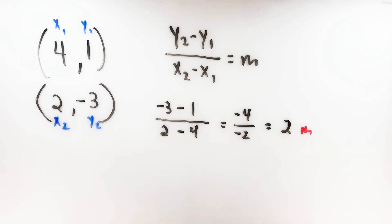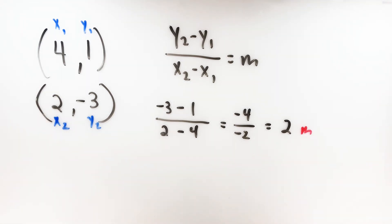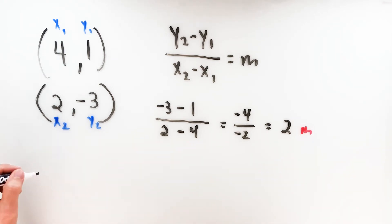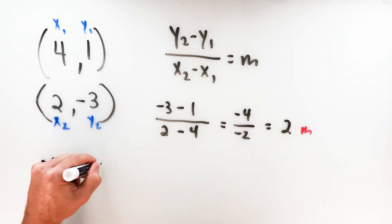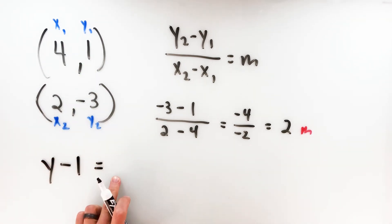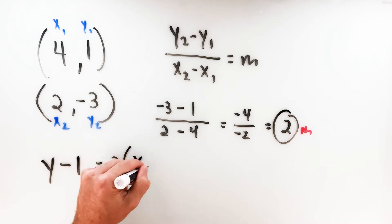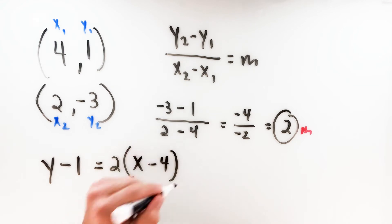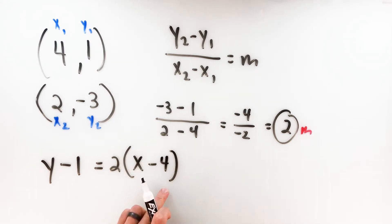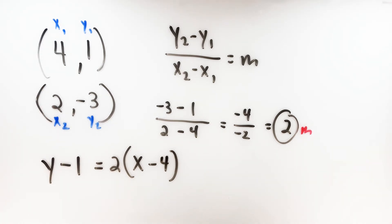Once I know my slope, I've got two points to choose from — it doesn't matter which one I choose. For point-slope form I can pick either one. Let's use the first point. So: y minus the y-coordinate, which is 1, equals the slope, which is 2, times parentheses x minus the x-coordinate, which is 4. So the equation is y minus 1 equals 2 times x minus 4. That's the equation of the line through these two points.